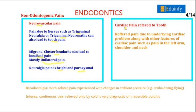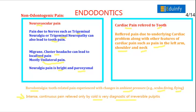There is sometimes cardiac pain that is referred to the tooth due to underlying cardiac problems. Features include pain in the left arm, shoulder, and neck that radiates to the tooth. Barodontalgia is tooth-related pain experienced when there is a change in ambient pressure, such as in scuba diving and flying. Intense continuous pain that is relieved only by cold is very diagnostic of irreversible pulpitis.